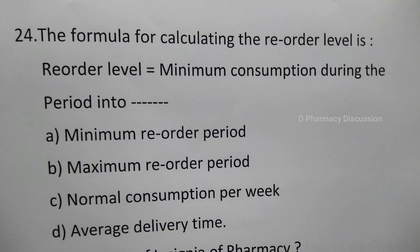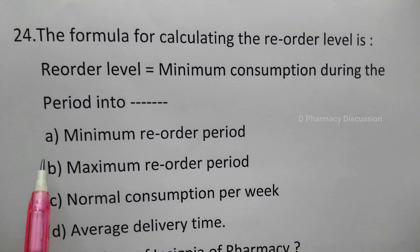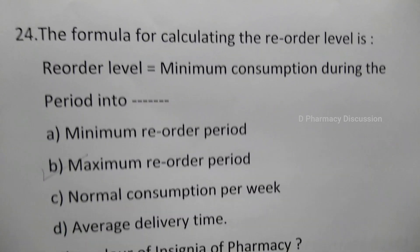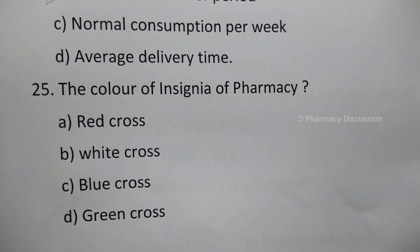Question 24: The formula for calculating the reorder level — reorder level equals minimum consumption during the period multiplied by — option A: minimum reorder period, B: maximum reorder period, C: normal consumption per week, D: average delivery time. The correct answer is option B, maximum reorder period.